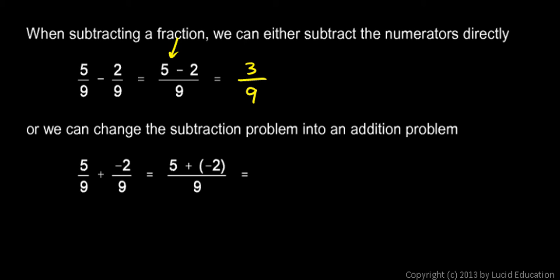So we can just subtract the numerators directly, or we can change the subtraction problem into an addition problem. Instead of saying 5 minus 2 ninths, we can say 5 plus negative 2 ninths. And then we add the numerators here, 5 plus negative 2. And 5 plus negative 2 is 3, so 5 plus negative 2 over 9 is 3 over 9.